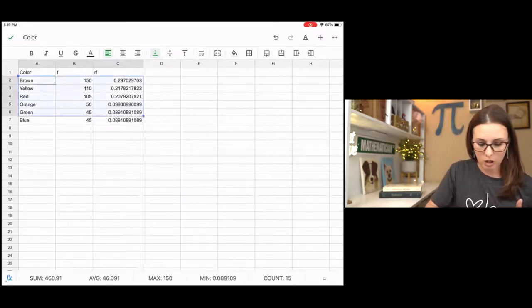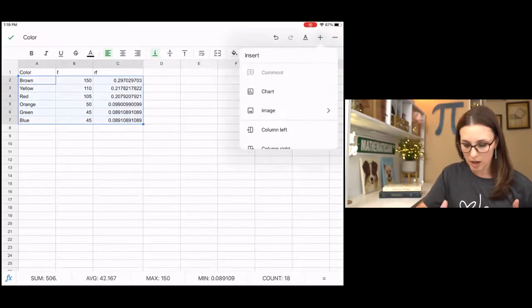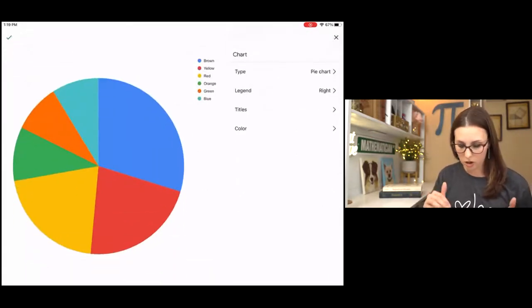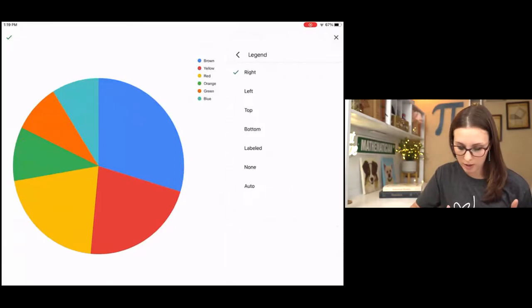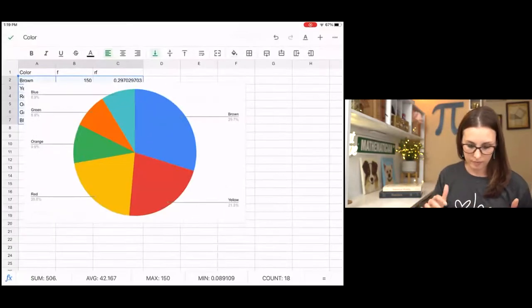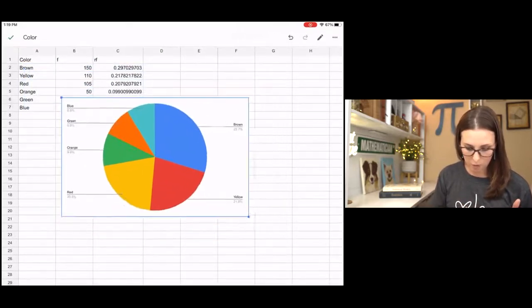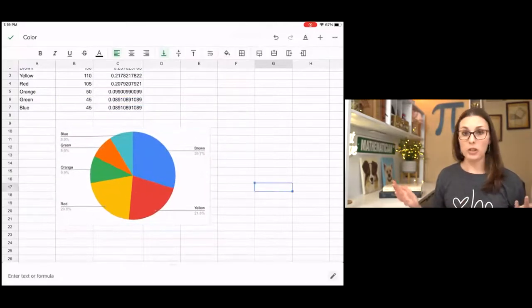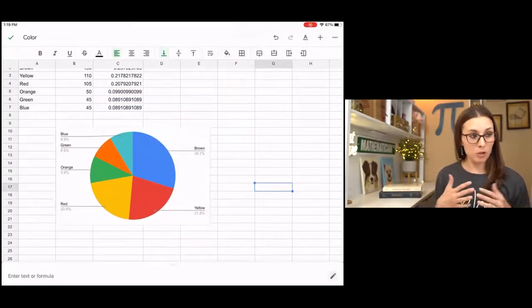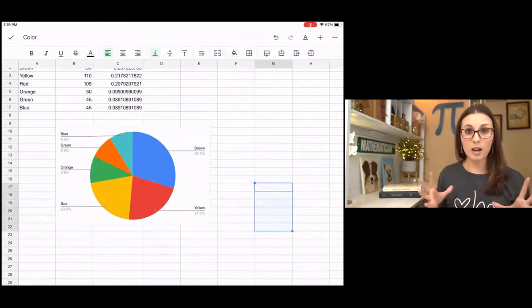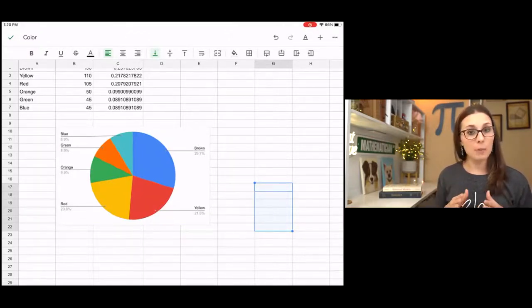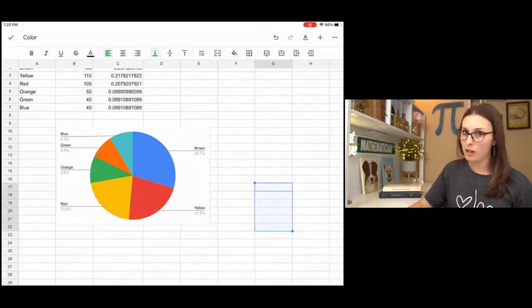And now we have our relative frequencies. And then we can do a pie chart. Add chart, pie chart. I want it labeled. And there's our chart. Isn't that so beautiful? And it has our percentages there, which we found from the table. So that is a complete process of what you would do if you wanted to do a pie chart or a bar chart. If you have any questions, please let me know. I'd be happy to help. Otherwise, that's all for today for this lesson. I hope you enjoyed it.